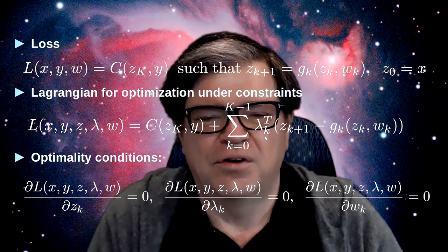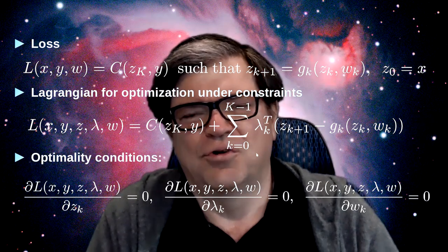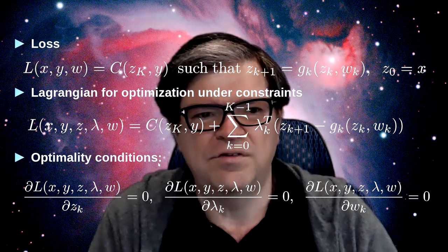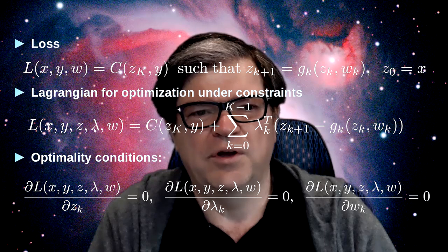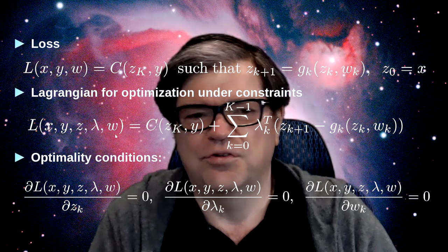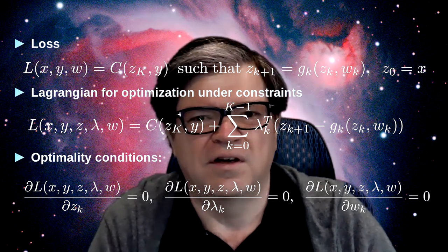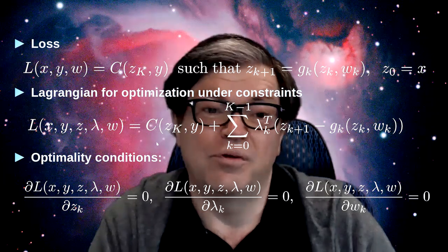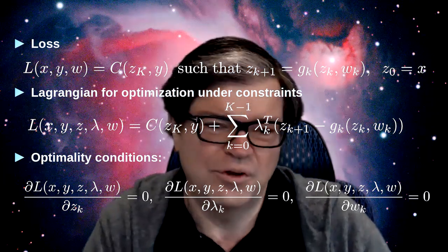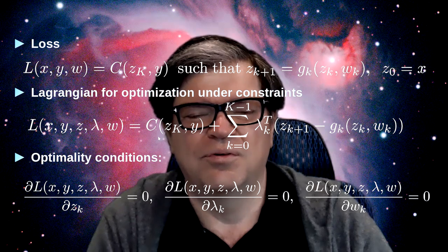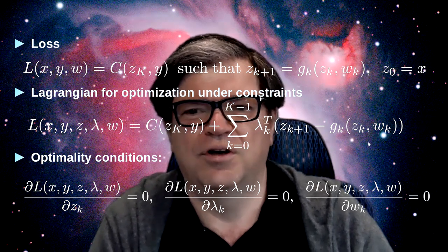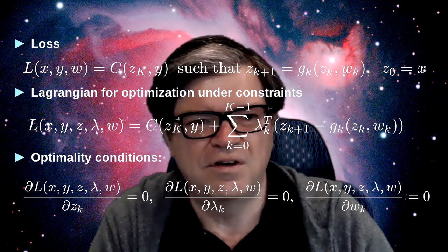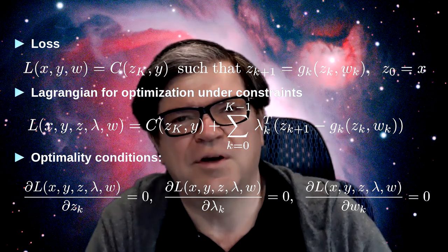I've made the loss function more explicitly dependent not just on x and y, but also on extra variables z and lambda. I've written this in the form of a Lagrangian. Pretty much all of you have seen how you can express an optimization with constraints using a Lagrangian - I know it's intuitively mysterious why this works. The way you express a minimization of a constrained problem is to build a function which is the sum of the original function you want to minimize plus the sum of the constraints multiplied by Lagrange multipliers, usually denoted lambda. Our constraints are vector constraints, so our Lagrange multiplier itself is a vector - it's the dot product between the Lagrange multiplier vector and the constraint zk+1 minus gk of zk, wk.